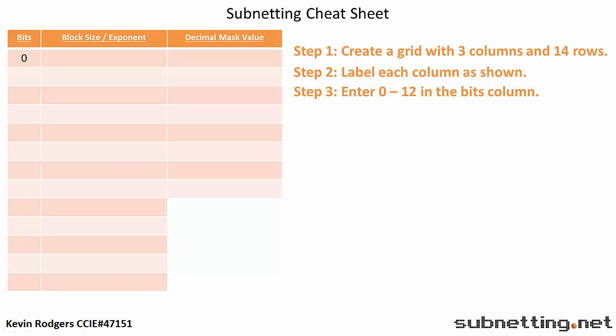In the Bits column, start with the number 0 and count up to 12: 1, 2, 3, 4, 5, 6, 7, 8, 9, 10, 11, 12.